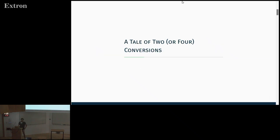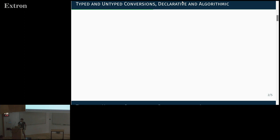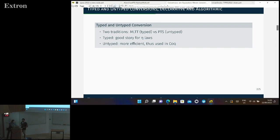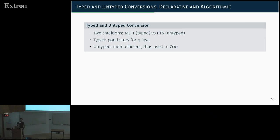I want to look at how these things relate on the more structured and algorithmic side. I'll talk about this in a second. So I want to relate all kinds of conversion and conversion algorithms. I'll start by giving an overview of the setting. There are actually four kinds of things I'm interested in. The first direction is typed versus untyped conversion. There are two traditions: the MLTT tradition with typed conversion judgments, and the pure type system setting with more untyped conversion judgment. They both have their advantages. The typed system has a better story for ETA laws when adding more type constructors, while in the untyped setting it's more subtle. But the untyped one gives you more efficient algorithms because you don't have to maintain types. That's what's used in Coq, for instance.